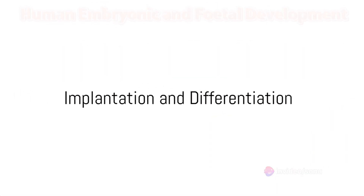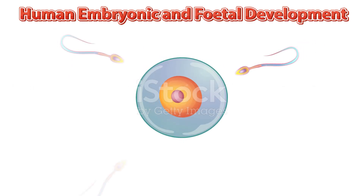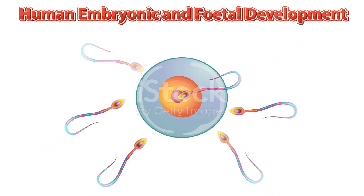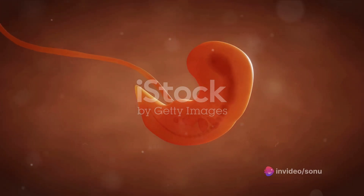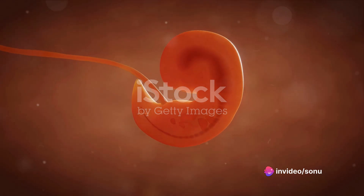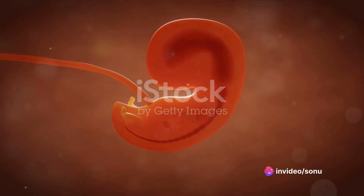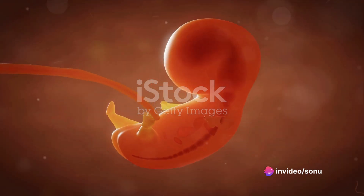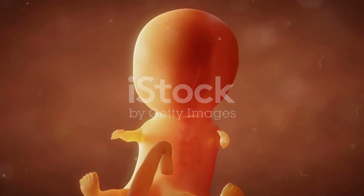Around the seventh day, the blastocyst implants itself into the uterus's wall, marking the beginning of the implantation phase. The inner cell mass now differentiates into two layers, the epiblast and hypoblast, collectively known as the bilaminar germ disc.